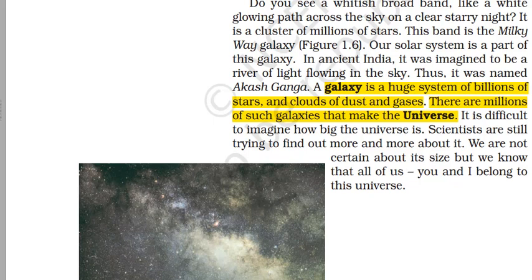The last terms are galaxy and universe. A galaxy is a combination of so many solar systems. It is very difficult to imagine how big the universe is — scientists are still trying to find out. It is generally believed that the universe is expanding — it is getting bigger and bigger with time, so it is very difficult to imagine how vast it is.